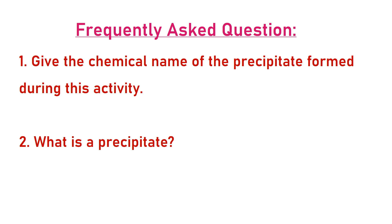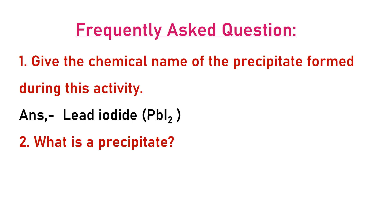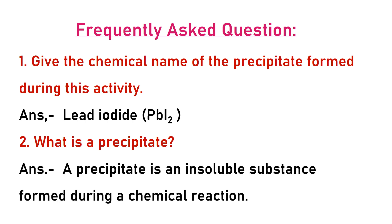Frequently asked questions: First question — give the chemical name of the precipitate formed. The answer is lead iodide; chemical formula is PbI₂. What is a precipitate? A precipitate is an insoluble substance formed during a chemical reaction. It does not dissolve in water or any other solvent.